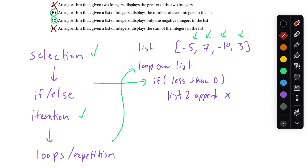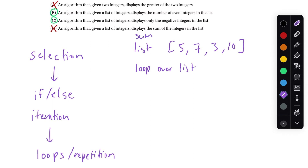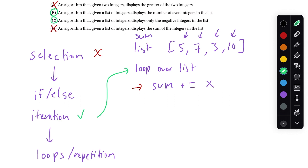By process of elimination D is not right, but let's see why. We're given a list of integers like five, seven, three, ten, and need to display the sum. An algorithm for that would loop over the list and do sum plus equals x — that's all the logic needed. We don't have selection here; there's no conditional execution, we're just adding to a sum. We do have iteration since we're looping over the list, but we need both. So the correct answers are B and C.